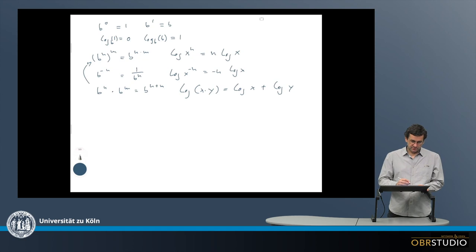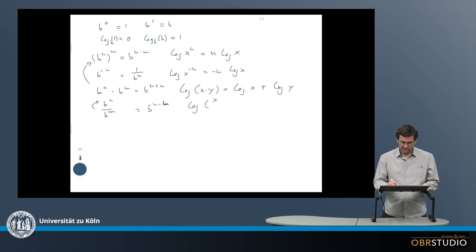Finally, b to the power of n divided by b to the power of m is equal to b to the power of n minus m. This is basically analogous to this. For logarithms, the logarithm of x divided by y is the logarithm of x minus the logarithm of y.